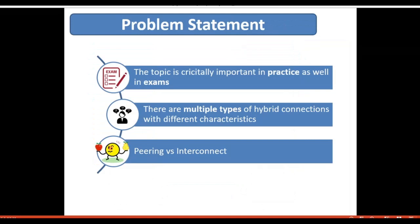Therefore, maintaining hybrid connectivity between on-prem and cloud until the migration is complete is one of the critical requirements. Why do we choose hybrid connectivity for this video? First of all, the topic is super important. In practice, if you are a member of a migration team and got asked to support the migration, you will understand the criticality of choosing the correct connection option from a design point of view and understanding the connectivity to operate it later on. It's also important for your Google exam.